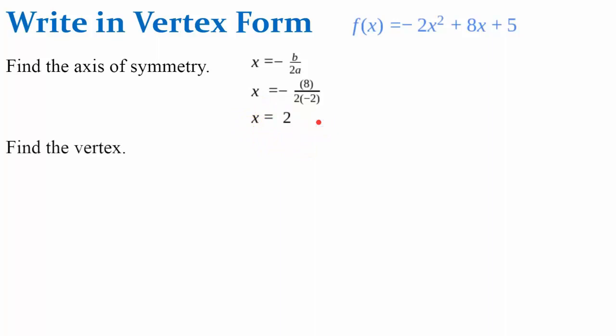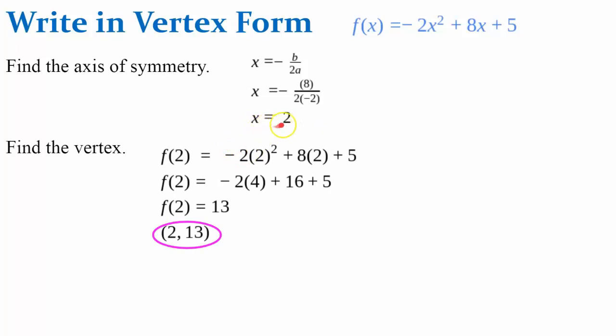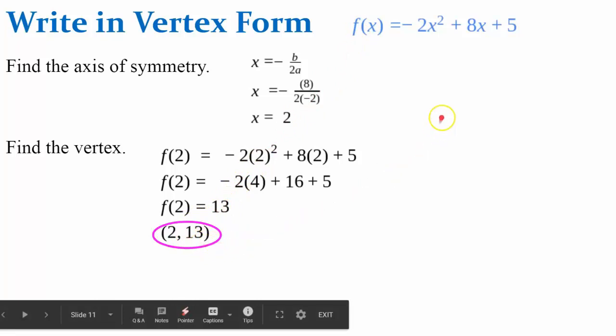Find the vertex. You go ahead and evaluate. You know the vertex falls on the axis of symmetry. So evaluate this function for an input of 2, giving me an output of 13 so I know my vertex is (2, 13).